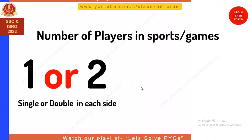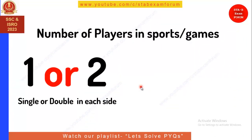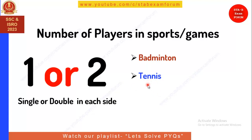Coming to the next category — one or two players on each side, i.e., singles or doubles. The first game is badminton; players like Saina Nehwal can play either singles, doubles, or mixed doubles, so each side can have either one or two players. Similarly, tennis and table tennis also have singles or doubles formats, so each side can have one or two players.